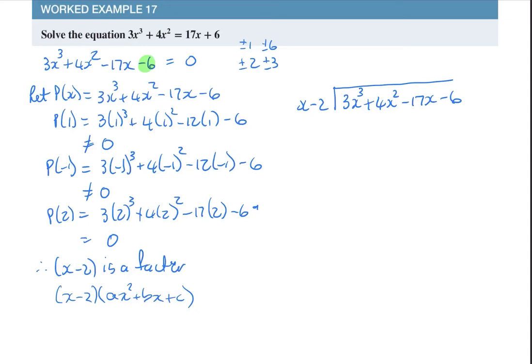I'm going to go very quickly now into this. I'm going to say x goes in 3x cubed, 3x squared times, I'm going to multiply back, that gives us 3x squared minus 6x squared. I'm going to subtract, that becomes negative, that becomes positive. 3x takes away 3x is 0, 4x plus 6x squared is 10x squared minus 17x goes in.